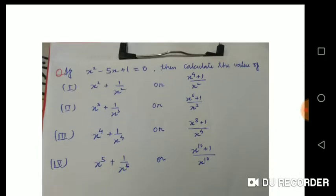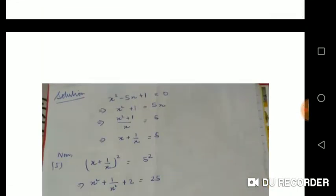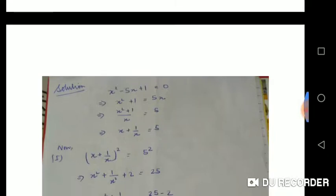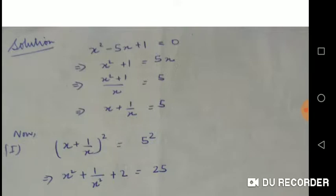We are going to see how to solve this type of equation. First we solve the quadratic equation which is given to us: x² - 5x + 1 = 0. Then we rearrange it as x² + 1 = 5x. Dividing by x gives x + 1/x = 5.